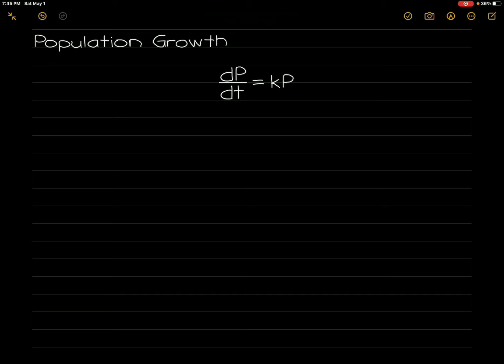The growth rate of population is proportional to the population, where dp/dt refers to the change in population with respect to the change in time, k is the constant of proportionality, and p is the population. This first-order differential equation can be solved by separation of variables, which gives us dp over p is equal to k times dt.